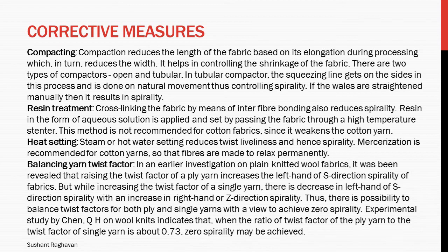Balancing yarn twist factor: research on plain knitted wool fabrics revealed that raising the twist factor of a ply yarn increases the left-hand or S direction spirality, while increasing the twist factor of a single yarn decreases the S direction spirality with an increase in Z direction spirality. Thus there is a possibility to balance twist factors for both ply and single yarn to achieve zero spirality. An experimental study by Chen HQ on wool knits indicates that when the ratio of twist factor of ply yarn to single yarn is about 0.73, zero spirality may be achieved.